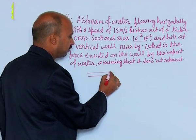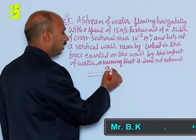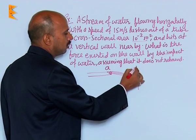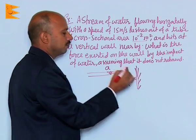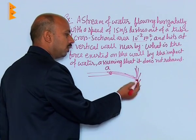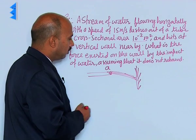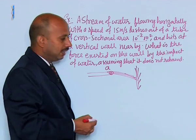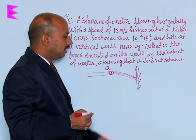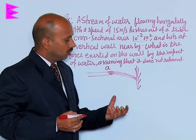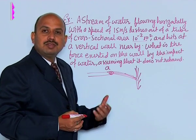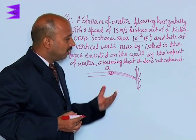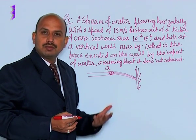Suppose there is a tube having cross-sectional area A, water is coming out with a certain speed and hitting a wall, and the water does not rebound. It means when the water is coming out and hitting the wall, we assume it comes to rest. That means there is a change in momentum, so the rate of change of momentum is equal to the force exerted — that will be equal to the impact.